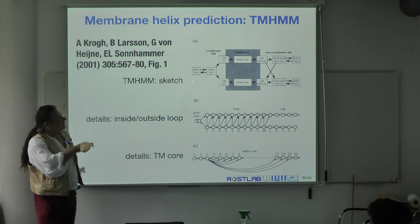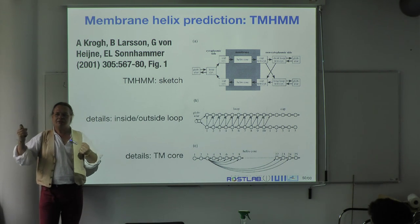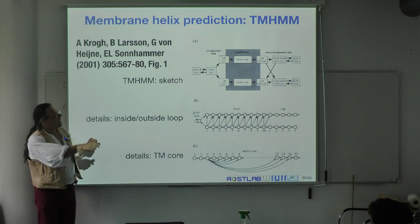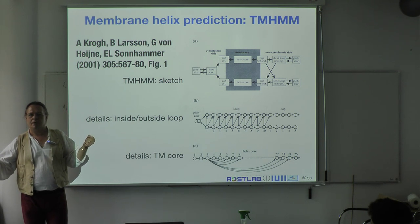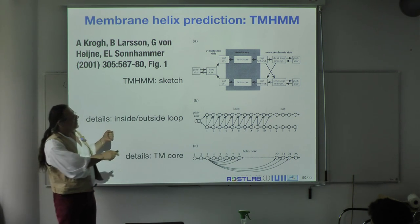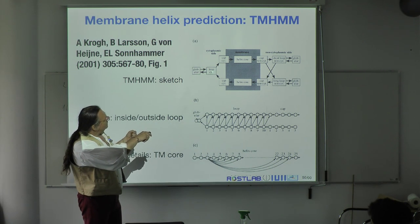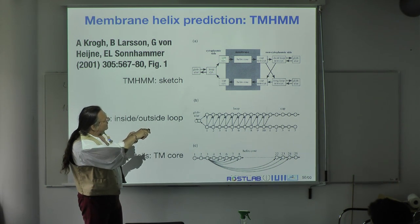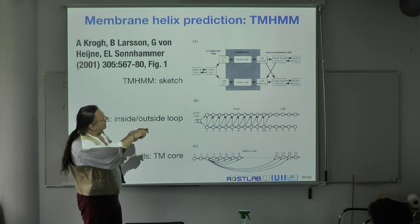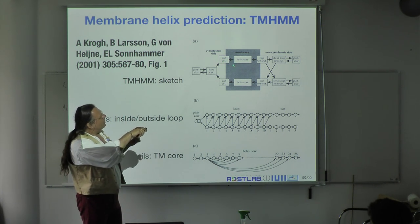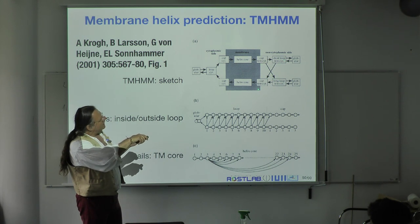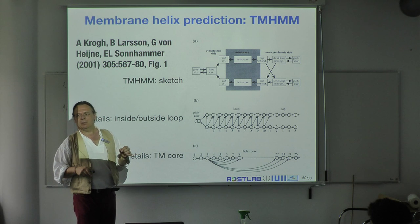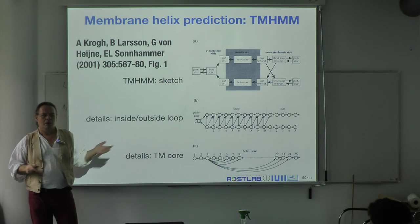You have two different sides of the membrane with slightly different environments, a helix core, and this is what you can put into a hidden Markov model — a grammar going from globular to cytoplasmic loop to helix core to non-cytoplasmic cap, then to a long or short loop, and possibly into an entire globular domain. To fill it with life, you assign transition probabilities by looking at the odds for the proteins you have observed.